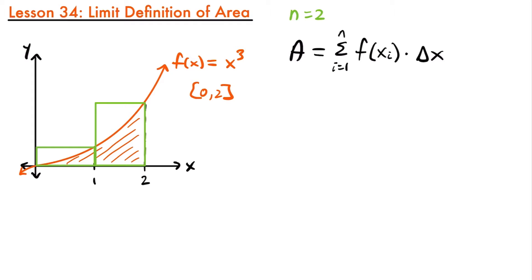This would be an approximation because when calculating the area of these rectangles, we're also including area above the curve, so it's not going to be an exact value. But if we use more rectangles — say n equals 4 — we get a better approximation. We'd have four rectangles, and the area added together is a closer approximation because we're not including as much space above the function. Notice that area right in here is no longer included when we use four rectangles.